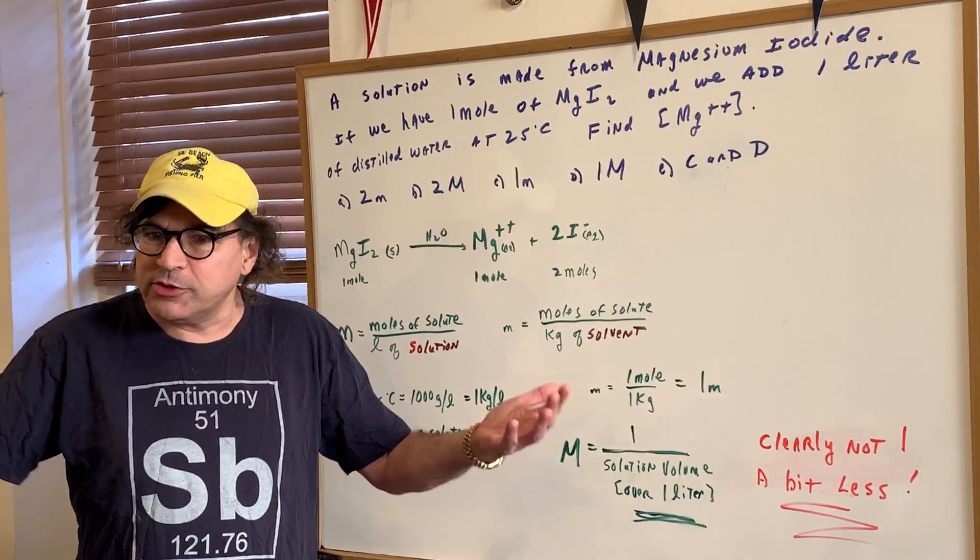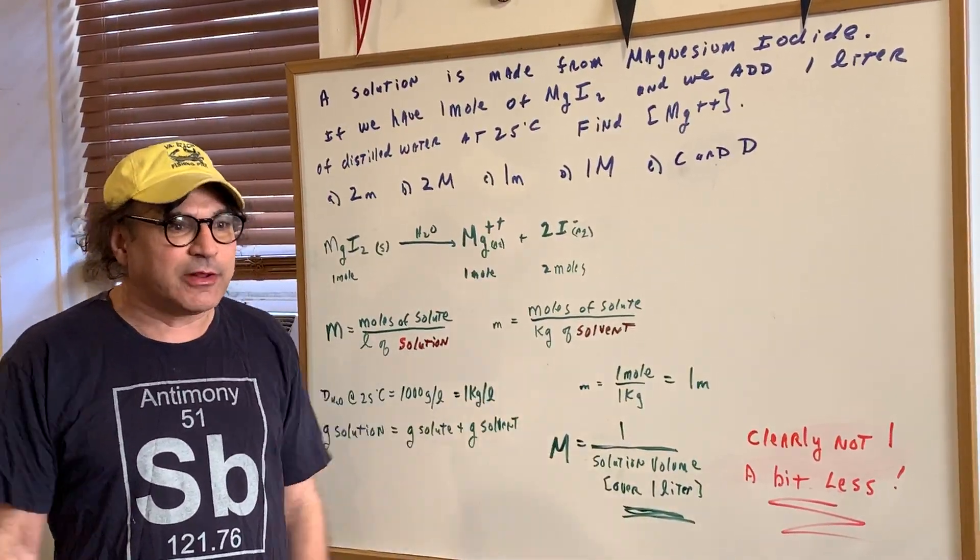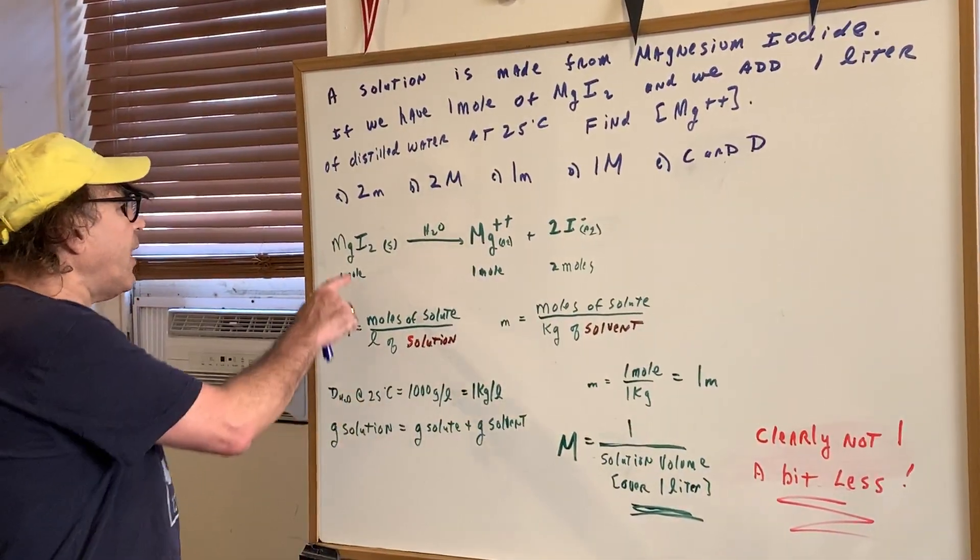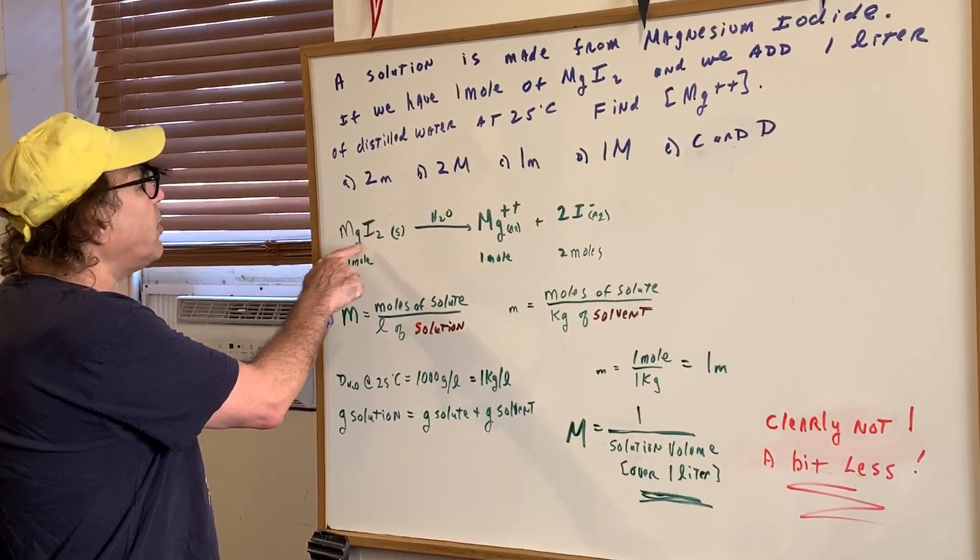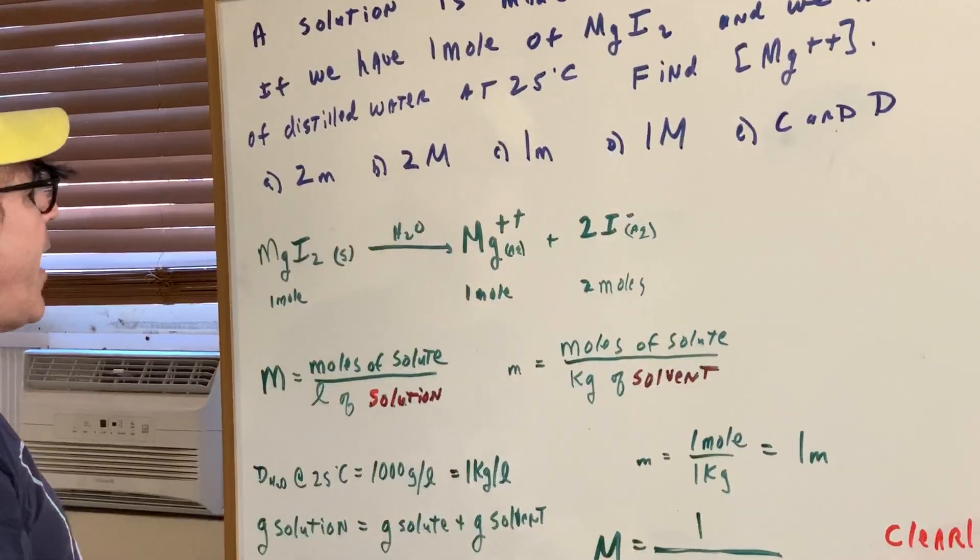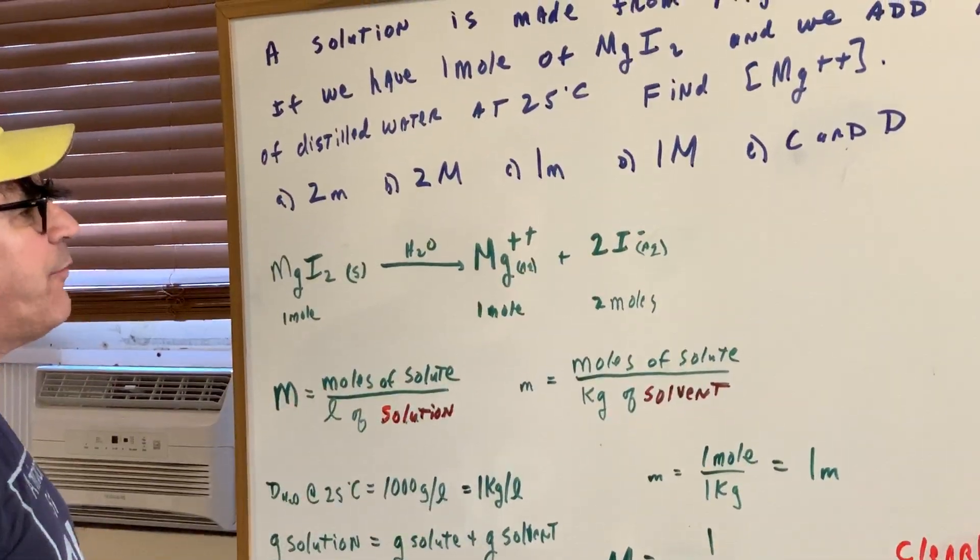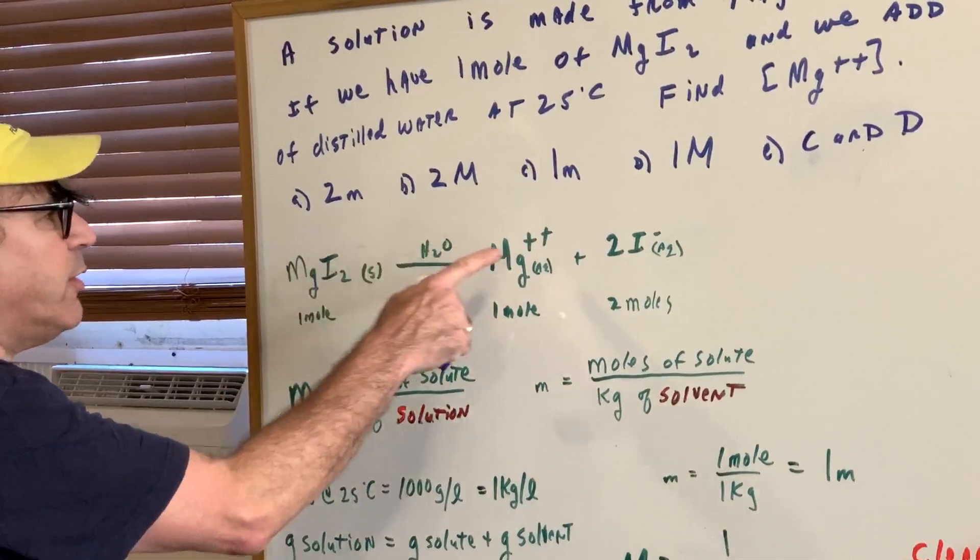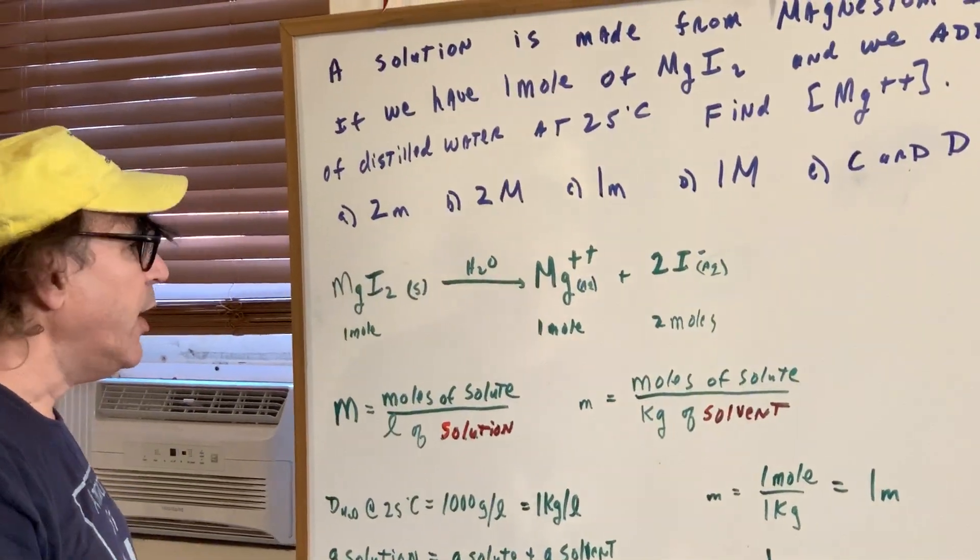It looks like a joke - are you serious? You have the moles and you have the liters. Well, if you look at what we did, we have one mole of magnesium iodide. We dissolve it in water and you get one mole of magnesium and two moles of iodide because it's a one to one to two ratio. Easy enough.